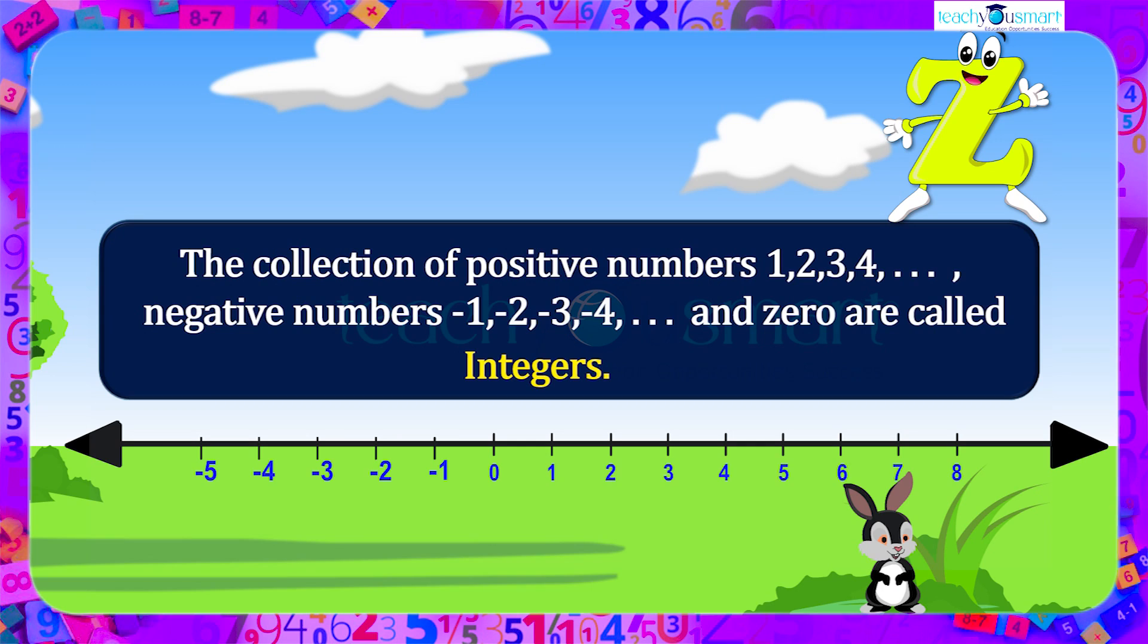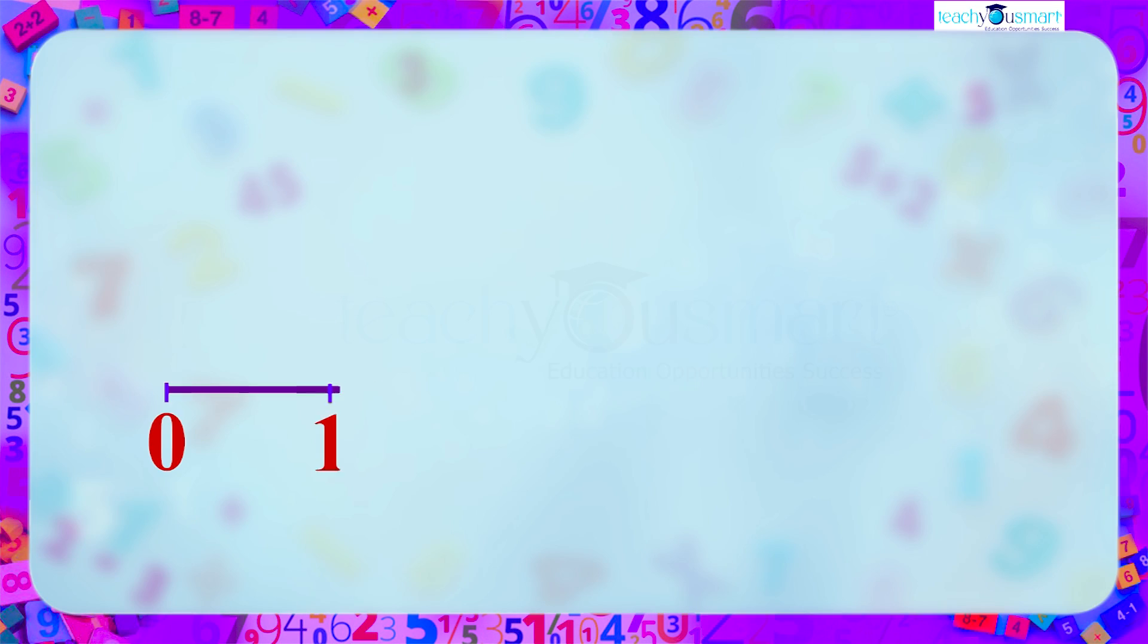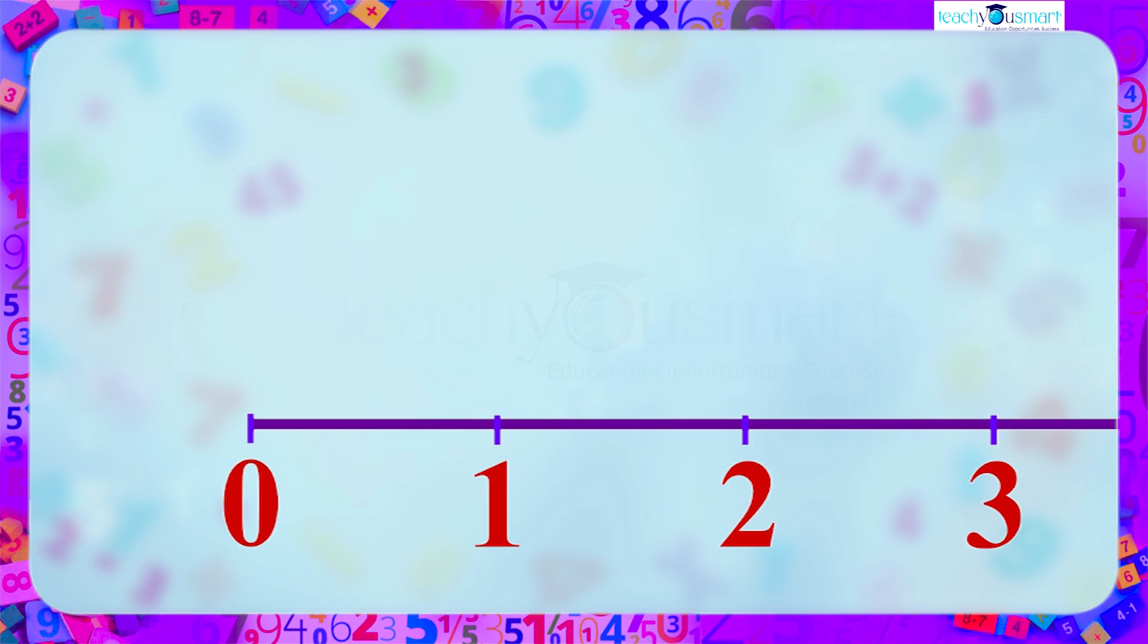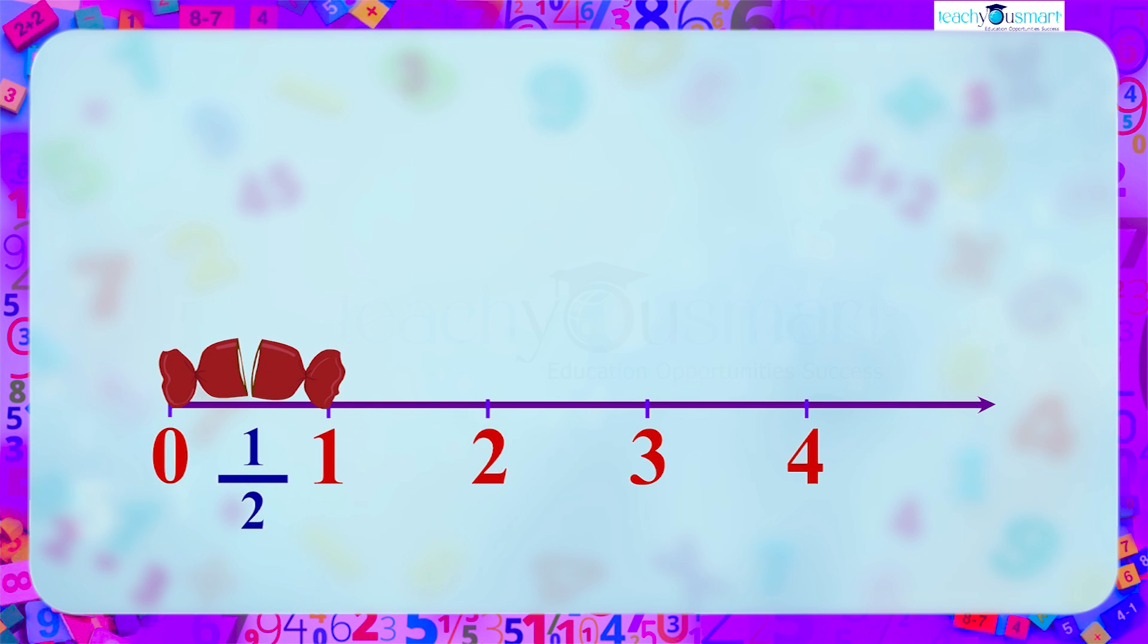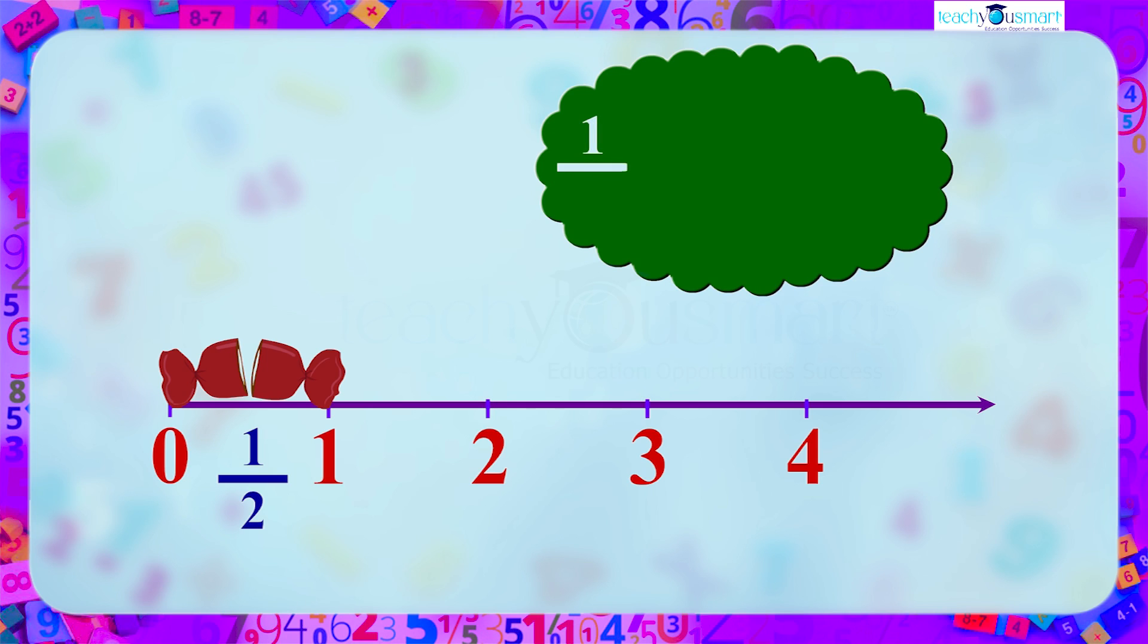Are there any more numbers that we can think about? Let's zoom into a section of a number line, say between 0 and 1. Are there any numbers in between 0 and 1? Let's consider this single unit between 0 and 1 to be a chocolate. What do we do if we want to share this chocolate between two people? Of course, we can cut it into two equal parts. Here one part is exactly half of the whole chocolate. That is, 1 by 2 plus 1 by 2 equals 1. Here 1 by 2 is a fraction.